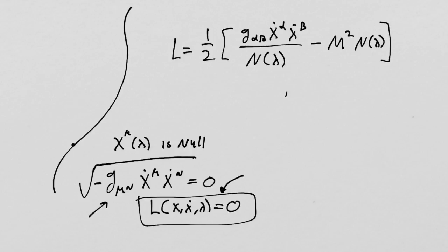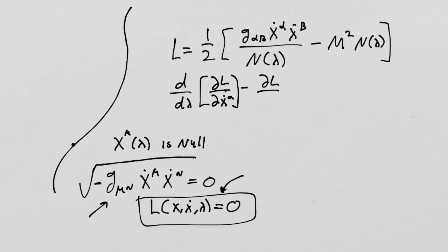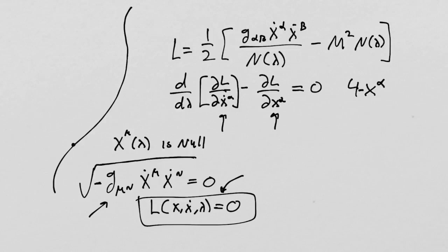If you run the Euler-Lagrange equation — which is d by d-lambda of partial-L over partial-x-dot-alpha, minus partial-L over partial-x-alpha, equals zero — that only accounts for the four values of x-alpha, the four generalized coordinates. There are four equations. Now there needs to be one more, since we've added another independent variable called n.